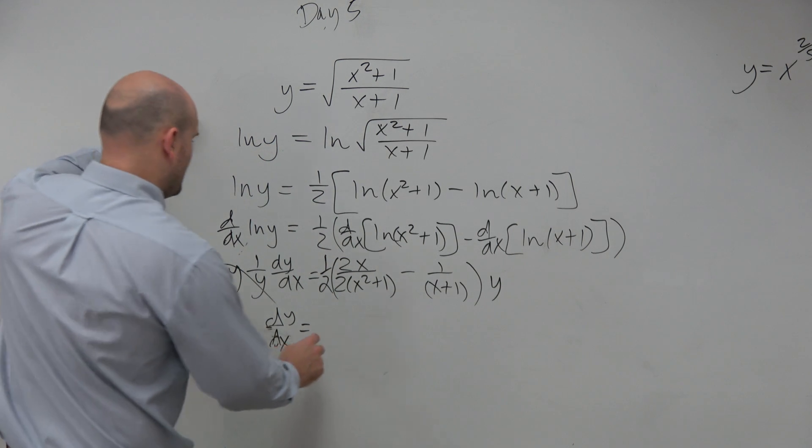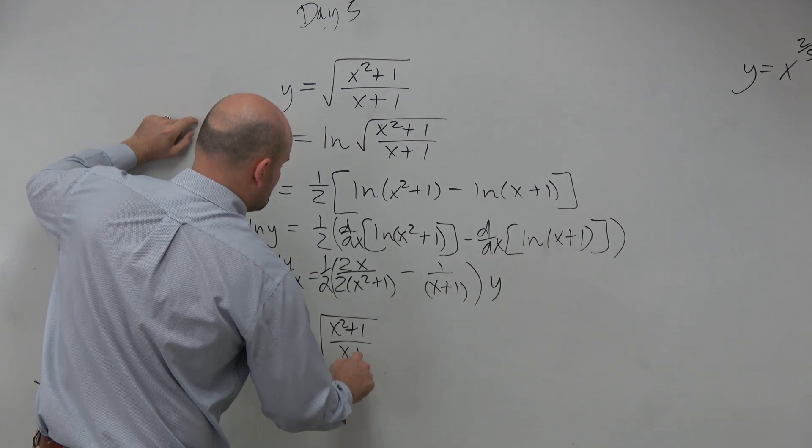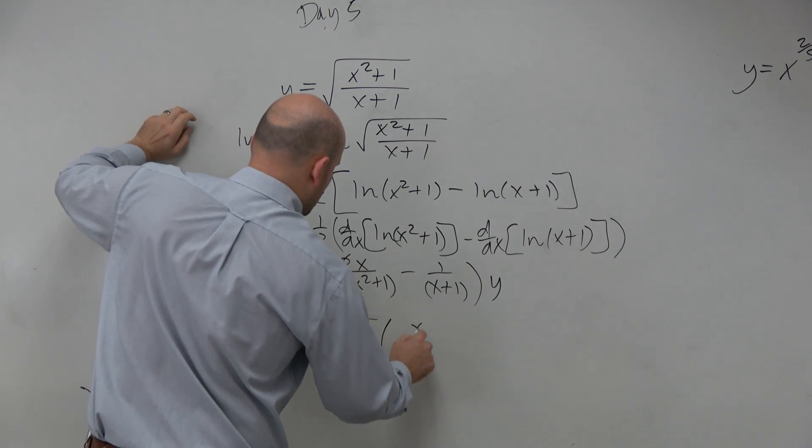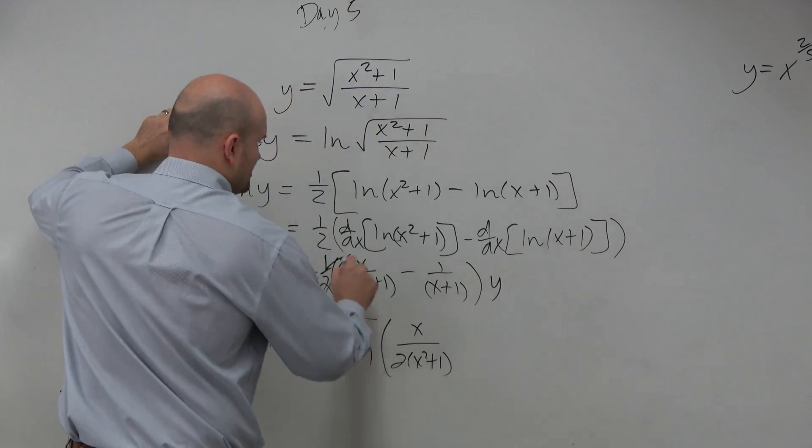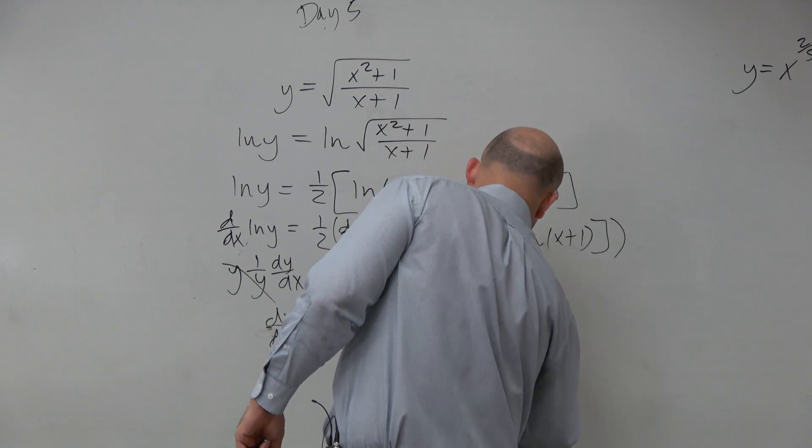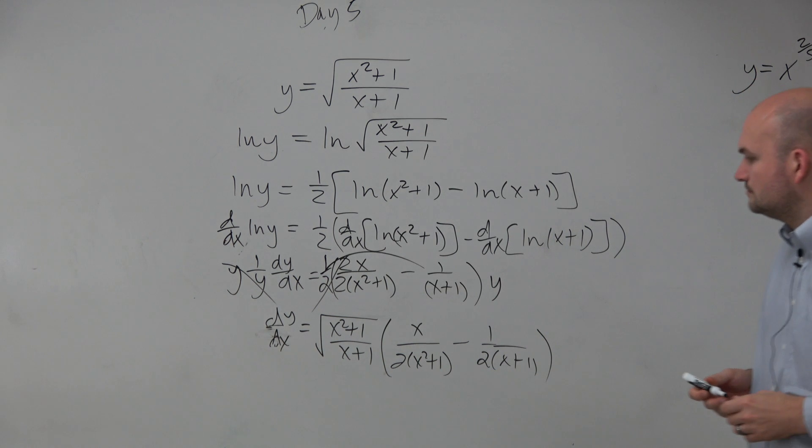What's my y? Let's write the y in front. x squared plus 1 over x plus 1 times, let's distribute that through. So it's going to be x over 2 times x squared plus 1. Make sure you also just distribute the 1 half there. So it's 1 over 2 times x plus 1. And there you go.